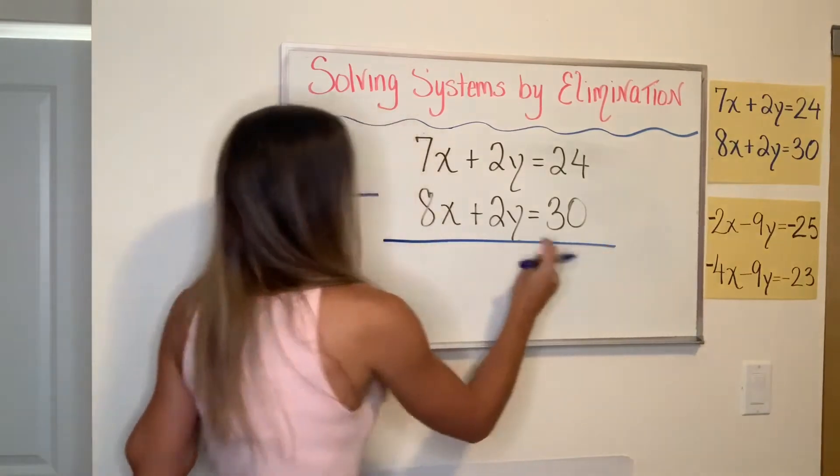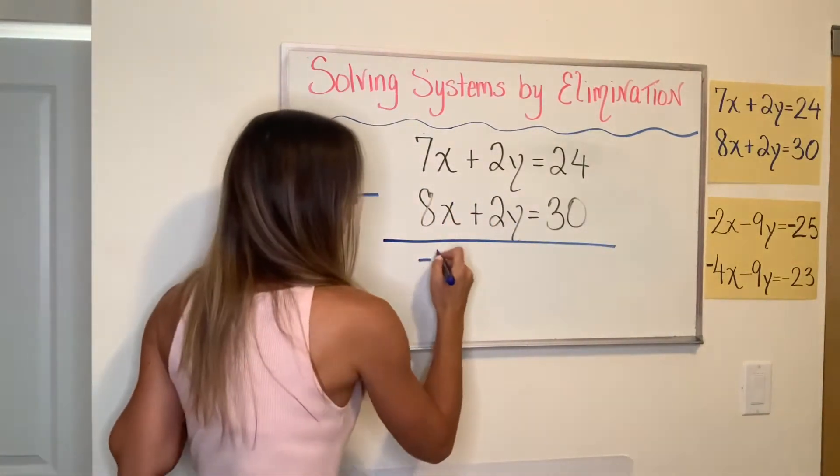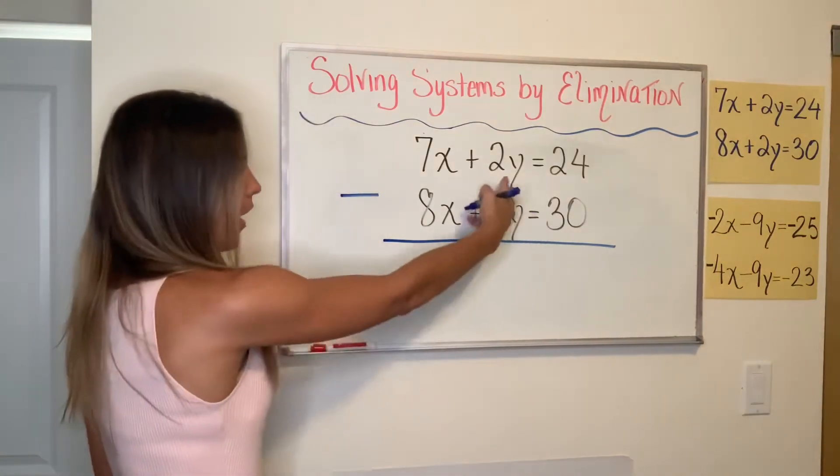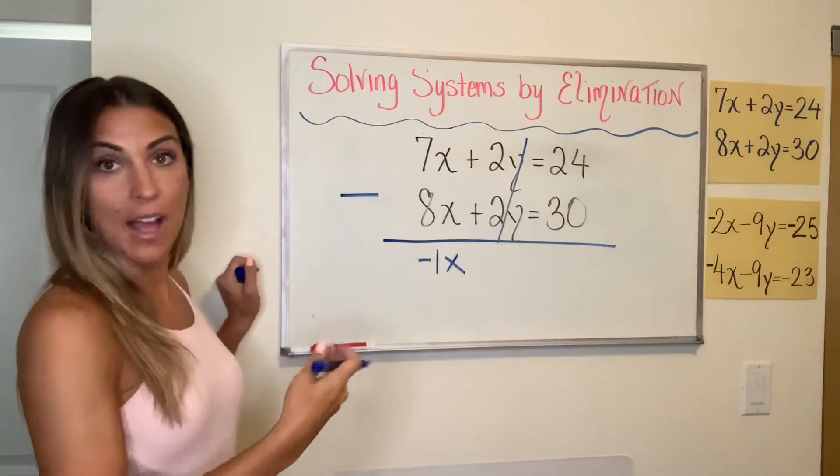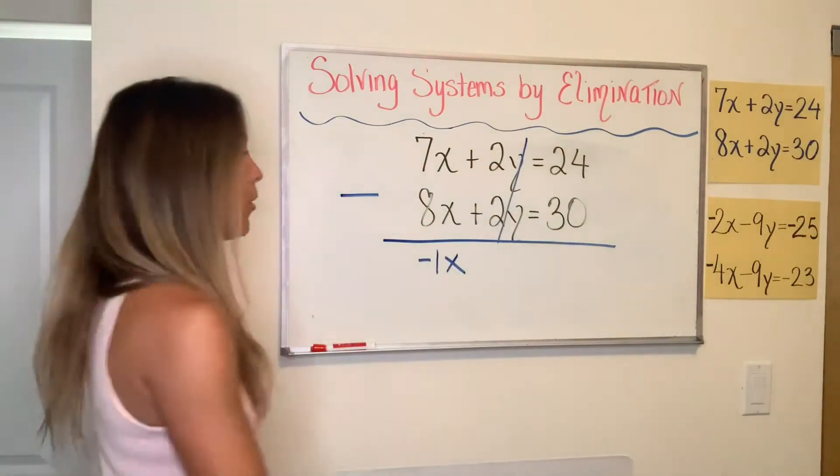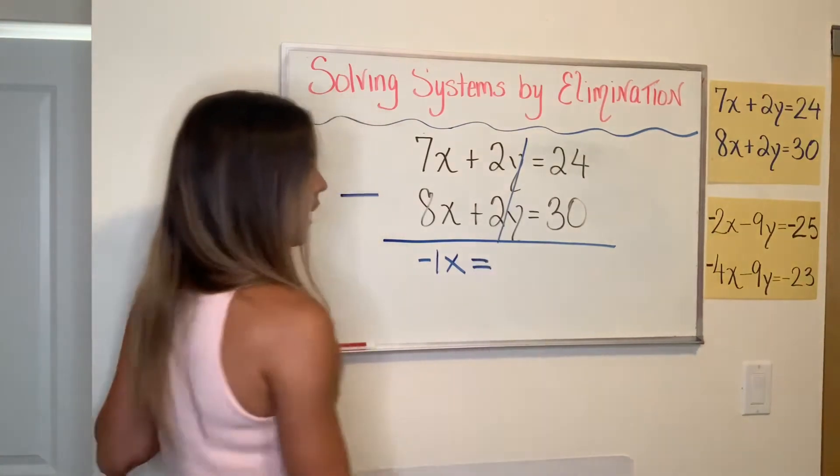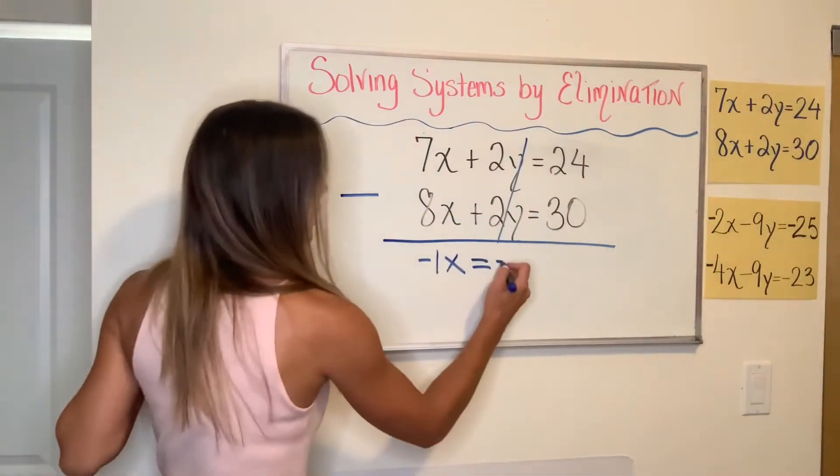So we're going to start with the X values: 7X minus 8X. That gives us negative 1X. 2Y minus 2Y is zero Y, so it'll cancel out again, achieving our whole purpose of eliminating a variable. And then on the right side of the equal sign, I have 24 minus 30, which is negative 6.